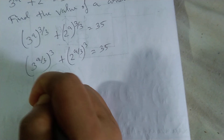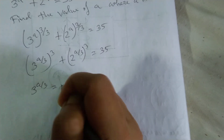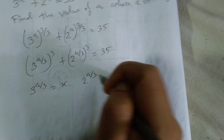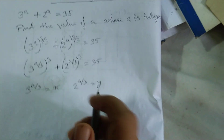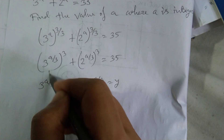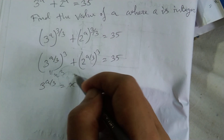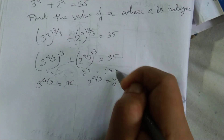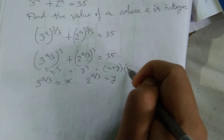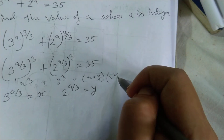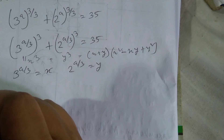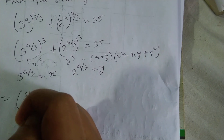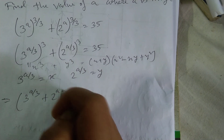Let x = 3^(a/3) and y = 2^(a/3). I am applying the formula: x³ + y³ equals (x + y)(x² - xy + y²). So I can write the equation as (3^(a/3) + 2^(a/3)) into (x² - xy + y²).